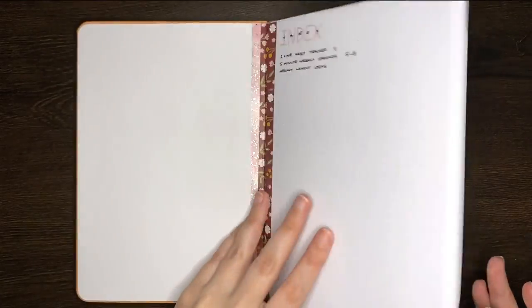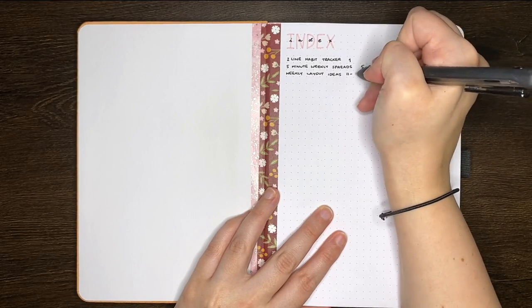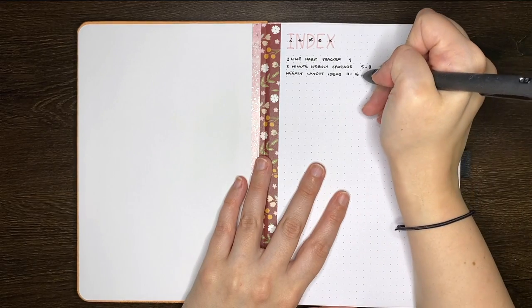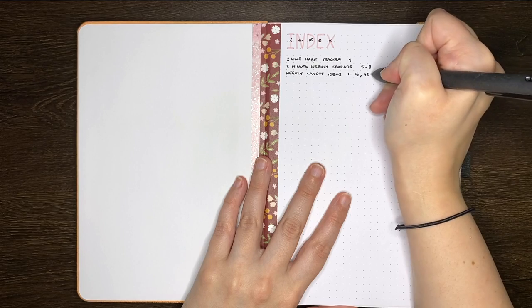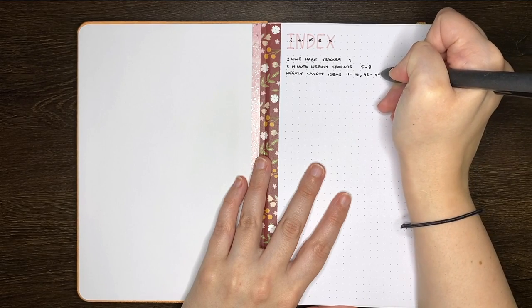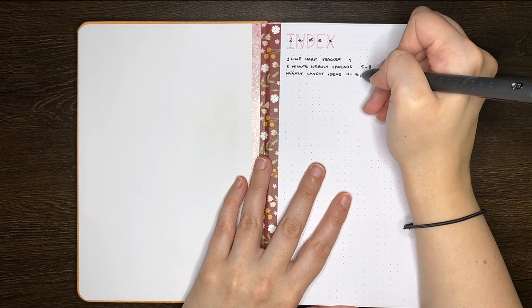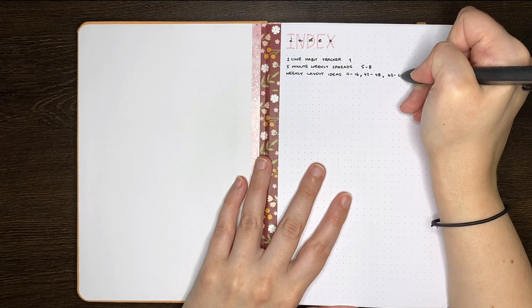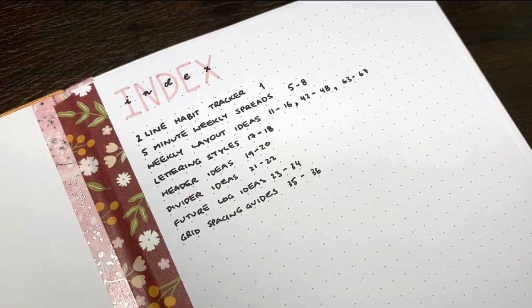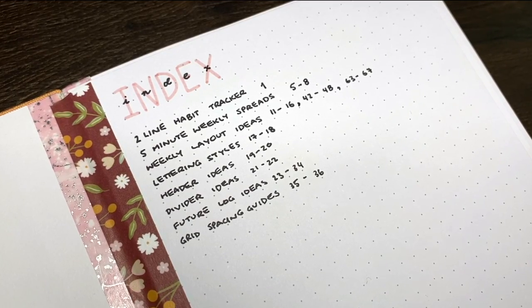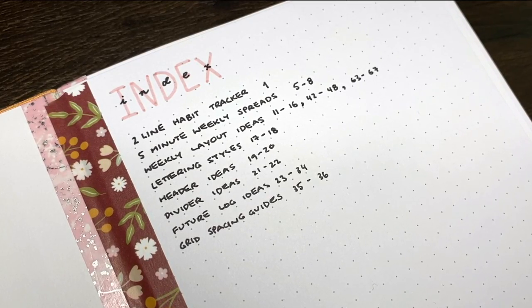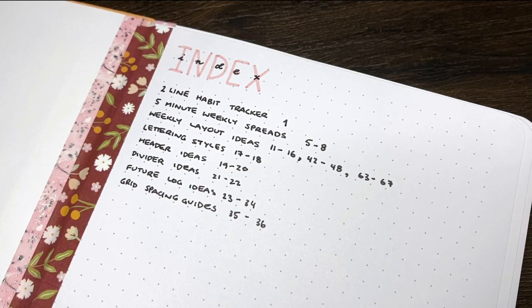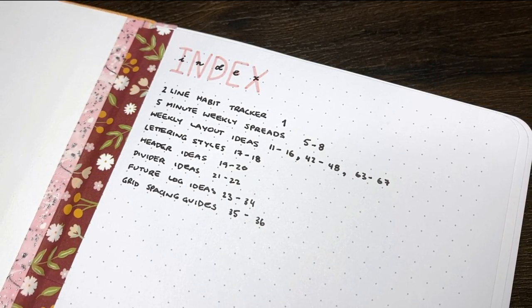Another point to consider are collections in your journal which span multiple pages, in particular those that aren't on subsequent pages. Rather than listing out every single page a collection spans as a separate index entry, what you can instead do is list the first page of that collection chronologically in your index, then write all of the page numbers that that collection spans next to that entry. This can be a lot more helpful than writing out all the pages as separate index entries as it reduces bulk in your index and allows you to quickly see where all of the pages for that collection are located in your journal, just with one entry.